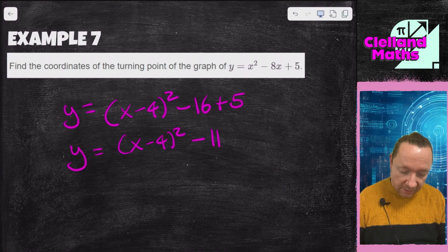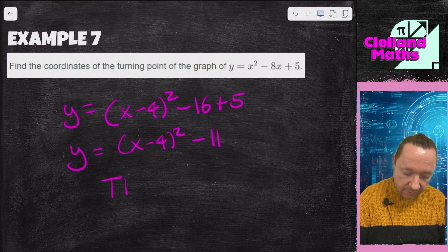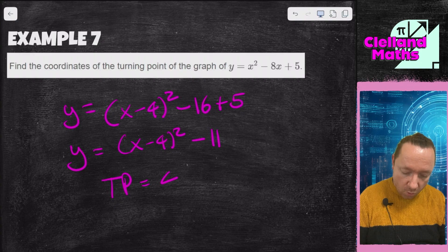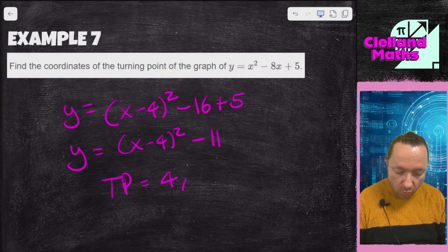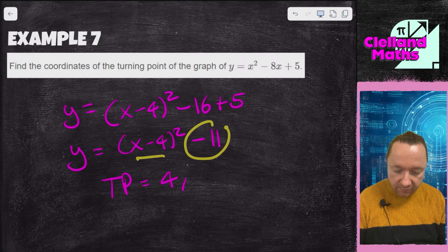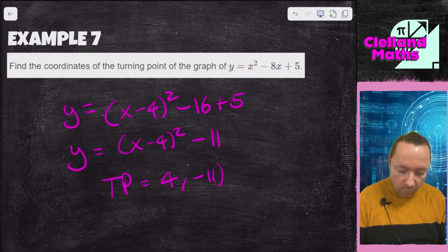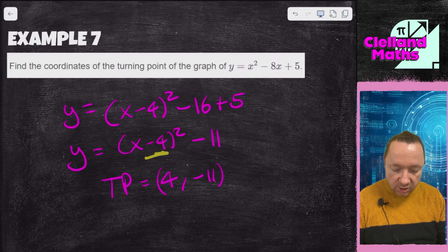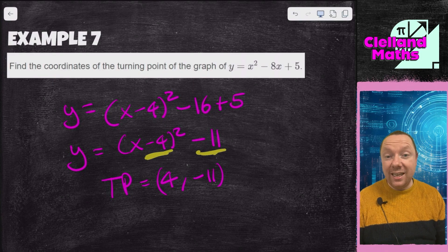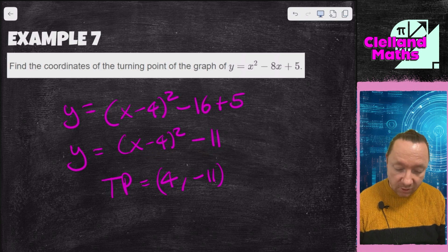So that means that the turning point, I'll call it TP, is 4. And the number when it's 4, 4 minus 4 is 0, is negative 11, so it's negative 11. A quick way to remember this is you change the sign on the first thing, but you leave the sign the same on the second thing. It's a turning point.